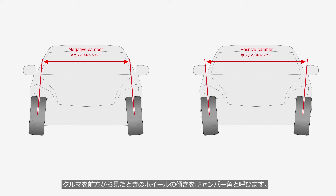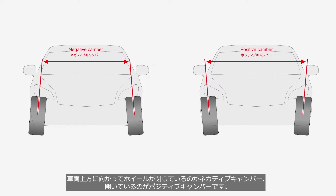The tilt of the wheels when viewed from the front of the vehicle is referred to as the camber angle. When the wheels are tilted inward towards the top of the vehicle, it is called negative camber, and when they are tilted outward, it is referred to as positive camber.